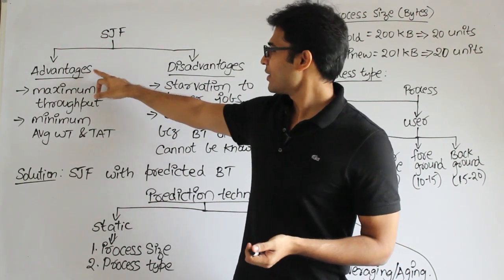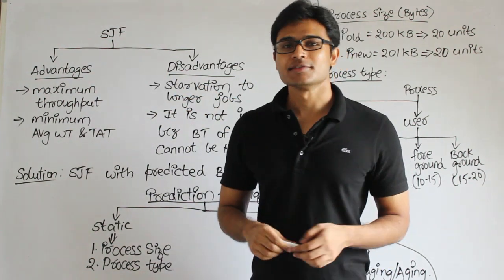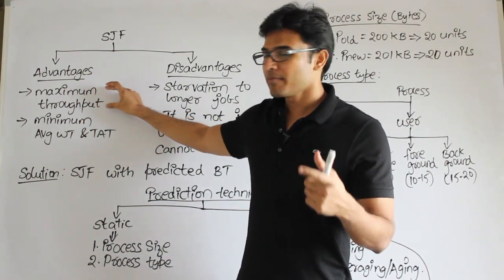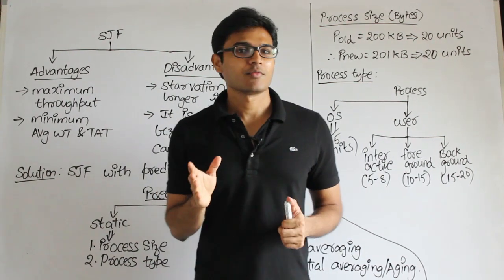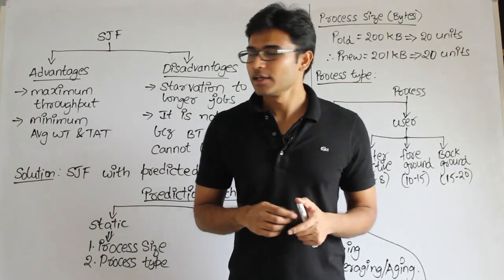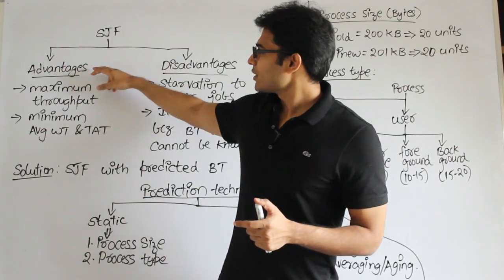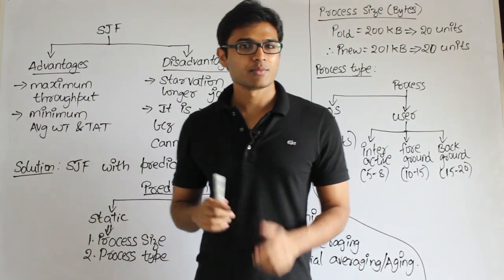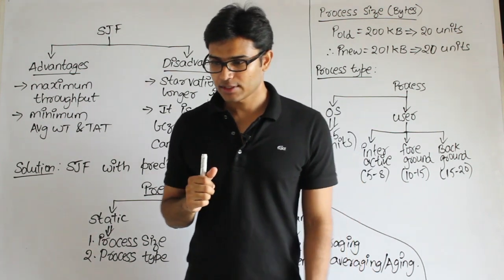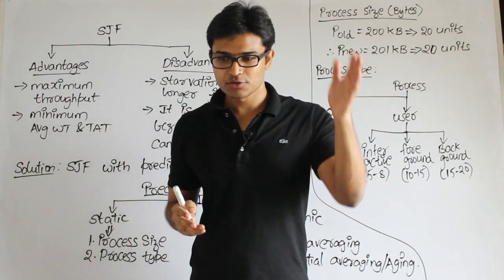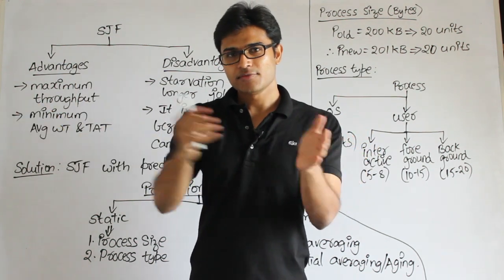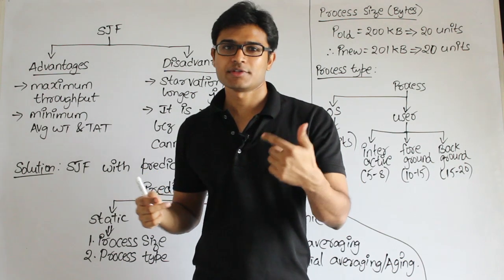SJF has both advantages and disadvantages. The advantage is that if you implement this for any process, it will lead to maximum throughput. Throughput means the number of processes finished per unit time. The schedule covers from when you started the first job to when you finish the last job, and within that time you count how many processes have completed.